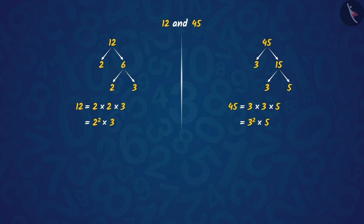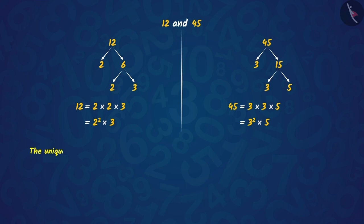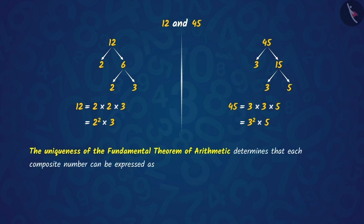But if you have written some other factors, then your answer is wrong because the uniqueness of the fundamental theorem of arithmetic determines that each composite number can be expressed as a product of prime numbers and this factorization is unique except for the order of the factors.